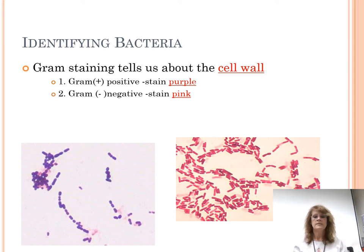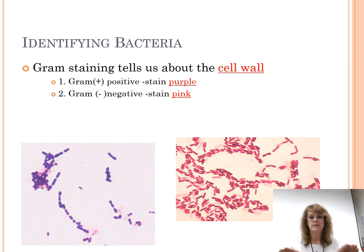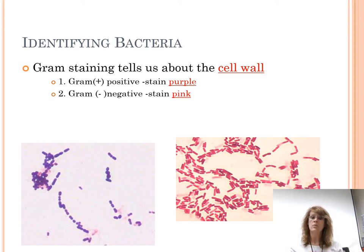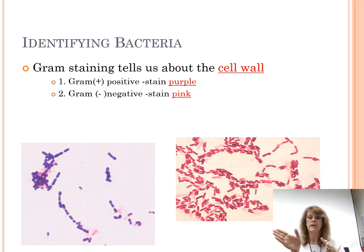If a bacteria has a thick capsule, it's harder for our bodies to kill it, or harder for chemicals to get to the cell wall to punch holes in it. We can do something called gram staining, which tells us about the cell wall. One of the reasons archaebacteria had to be separated from eubacteria is that eubacteria were discovered to have a protein in their cell wall — a substance called peptidoglycan — that archaebacteria didn't have.